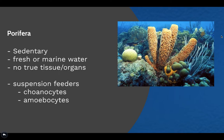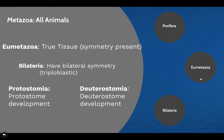These currents draw in water along with nutrients that pass through the sponge's pores. The nutrients are filtered out from unwanted material and taken into the cells through phagocytosis. Amoebocytes take in these nutrients and distribute them to the rest of the sponge. The figure on the right is a diagram of one type of Porifera.